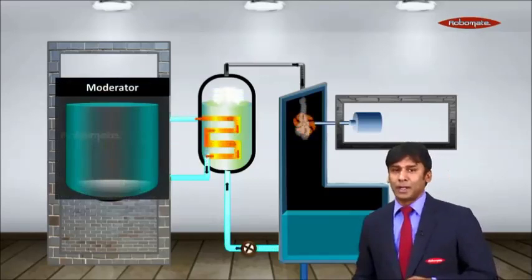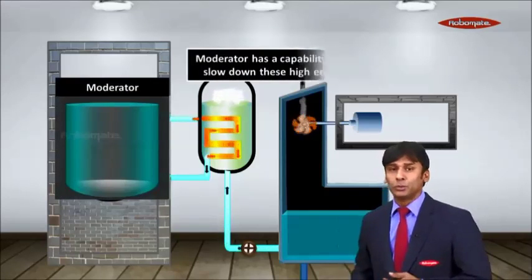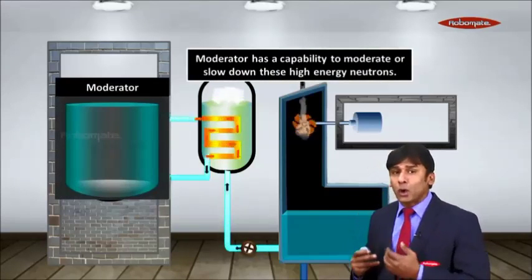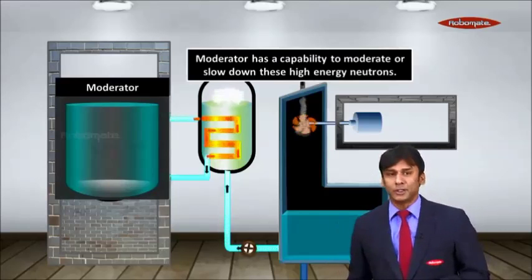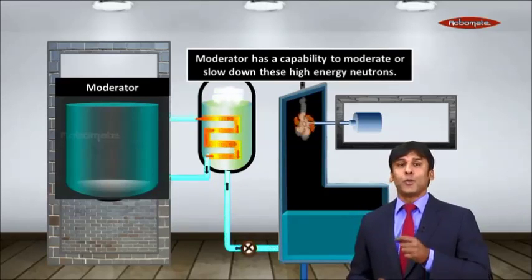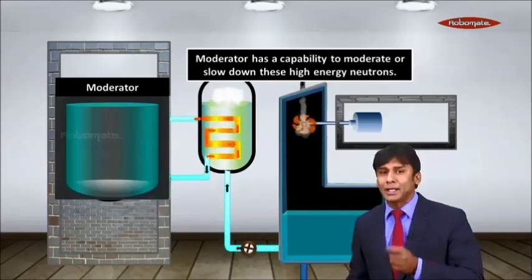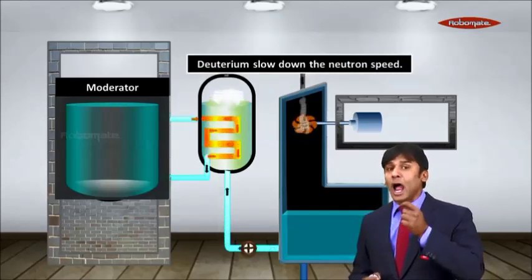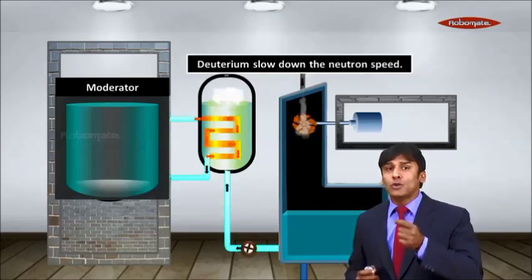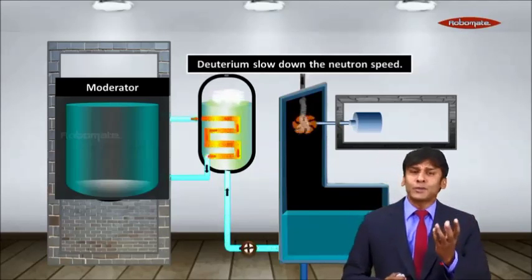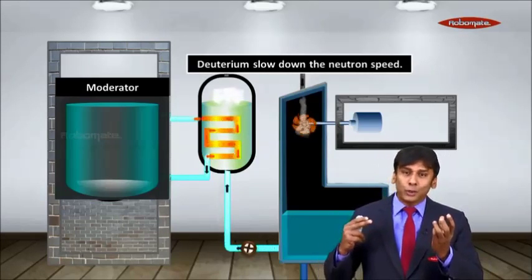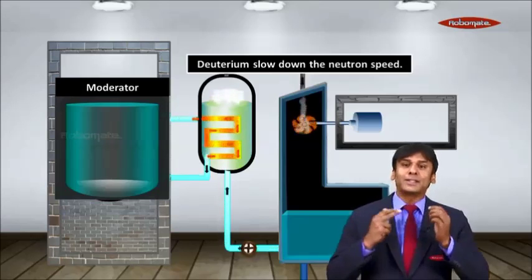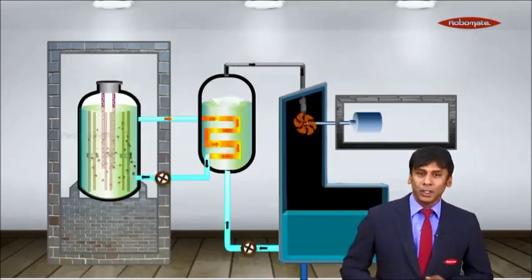Let us understand what a moderator does. The moderator plays the role of moderating this particular reaction. A moderator has the capability to moderate or slow down high-energy neutrons. Deuterium, which is heavier hydrogen, has the power to slow down the neutron speed. Because deuterium is very heavy, when a neutron goes and hits the deuterium, its kinetic energy will decrease.